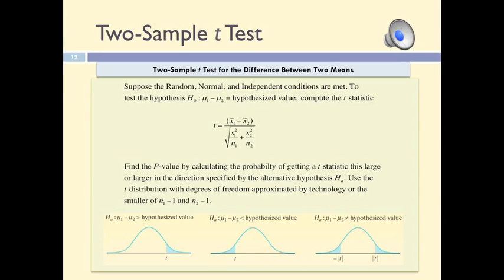The test statistic T is actually a standardized difference between the means of the two samples. The numerator of the formula is the difference between the two sample means, and we divide this difference by its standard error, which we already learned how to compute. Like with any other test of significance, after the test statistic is computed, we must determine whether this test statistic is far enough from zero to reject the null hypothesis, and we can do this either by using software or by hand using table C.